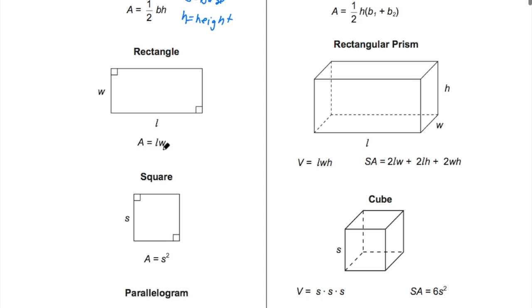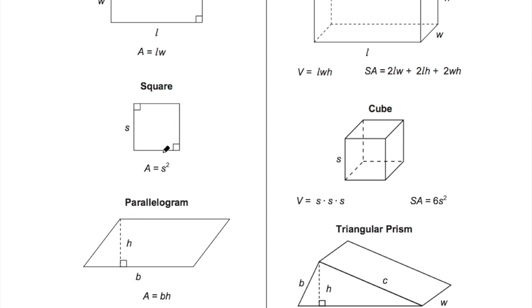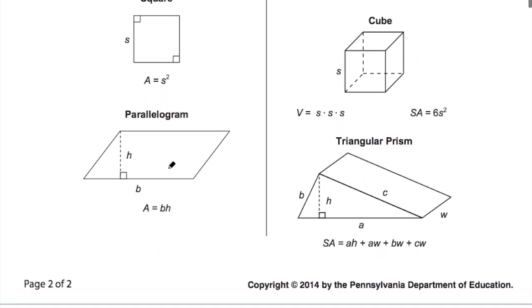For a rectangle, area is length times width, doesn't matter which is which. In a square, those length and widths are the same, so we just call it side squared. But you can certainly still use the formula for a rectangle to find the area of a square.